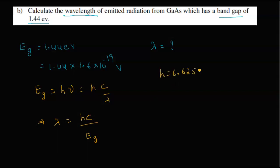Here h equals Planck's constant, that is 6.625 into 10 power minus 34 joule seconds, and c is the velocity of light, that is 3 into 10 power 8 meters per second. Now we will substitute all those values into this formula and we will get the answer.